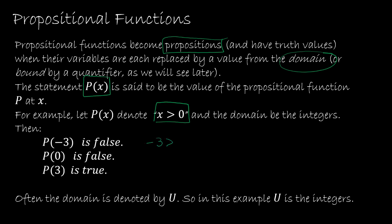P(0) would be 0 is greater than 0 which of course is false. P(3) would be 3 is greater than 0 which is true.